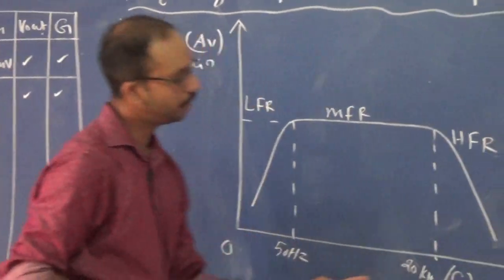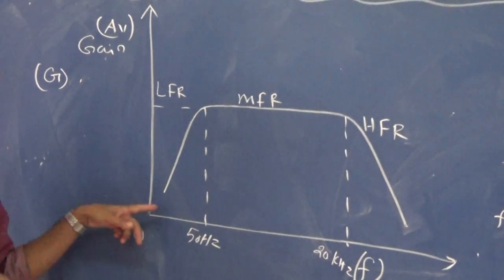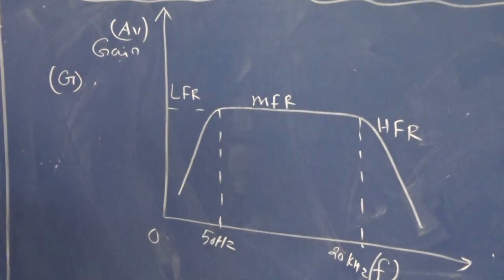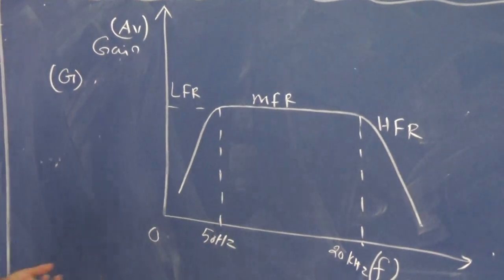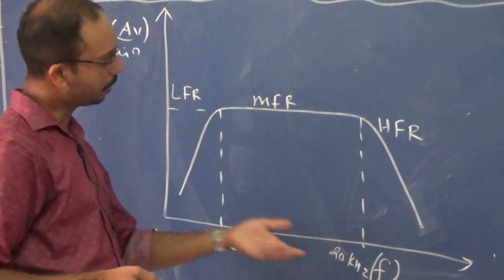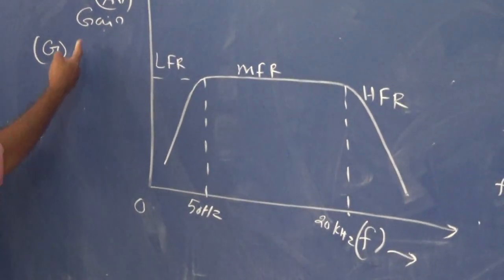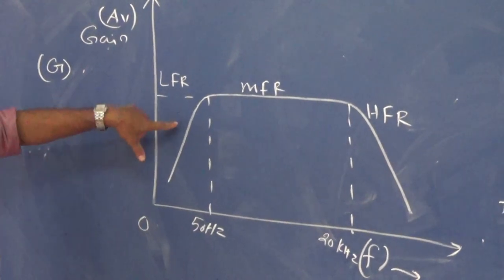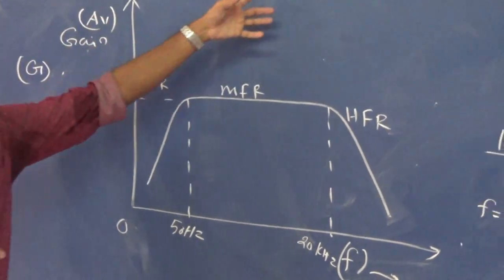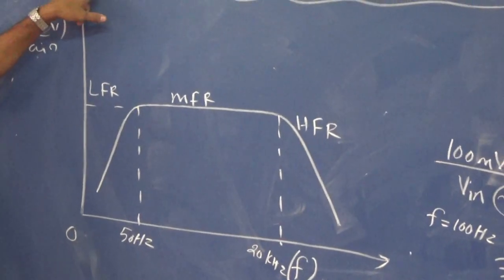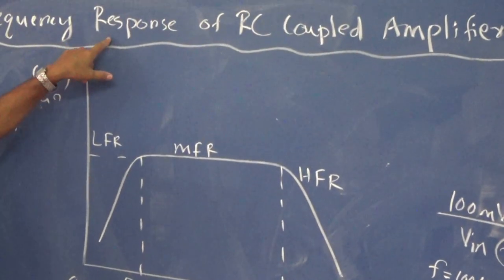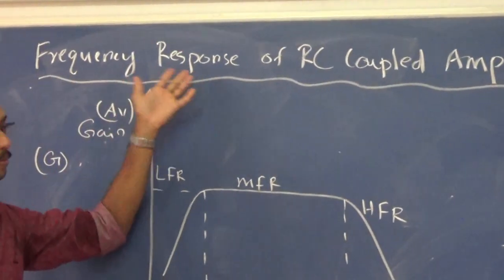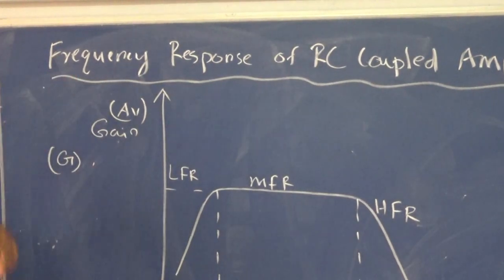We need to plot frequency versus gain on a semi-log graph sheet. We will get a diagram representing the frequency response of this RC coupled amplifier. Frequency response means the response of voltage gain to frequency variations, or the response of output voltage to frequency variations.